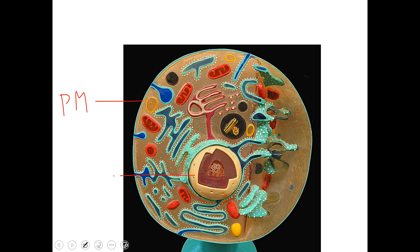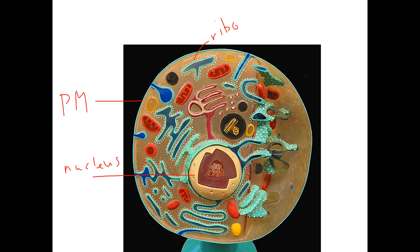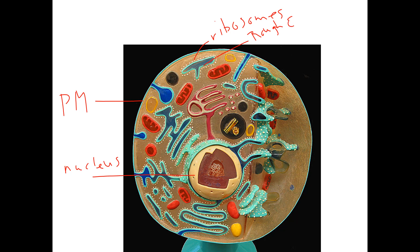This golf ball-looking thing in the middle is what ideally makes this a eukaryotic cell — that's the nucleus. Most animal cells have just one, but there are cells, even in you, that have more than one nucleus. Outside the nucleus you have all this blue tubing with little white dots on it. Those little white dots are ribosomes. Ribosomes function in protein synthesis — they carry out translation, reading messenger RNA and building proteins. The blue stuff with ribosomes on the surface is called rough ER, or endoplasmic reticulum. It makes proteins and folds them into the specific shape they're supposed to have.